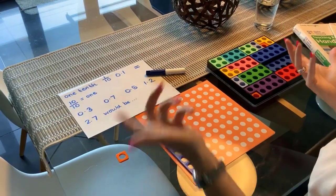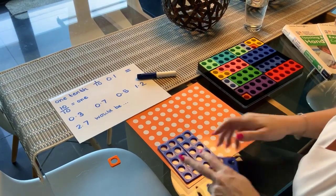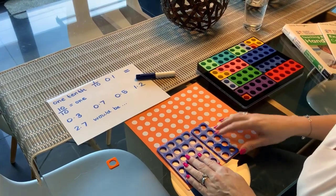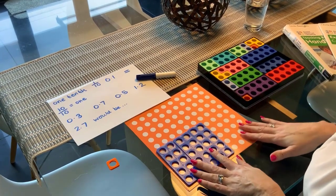And then we can start to work on some questions. So things like, what would zero point three be? So there's one tenth, two tenths, three tenths. So zero point three is three tenths, and it looks like this.